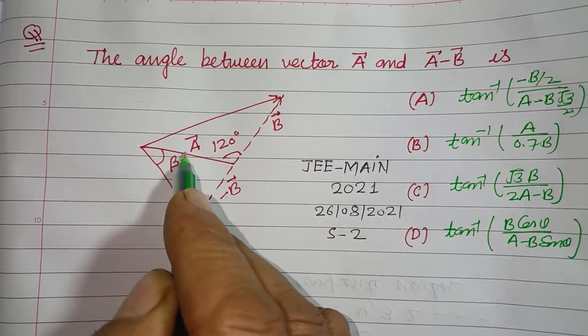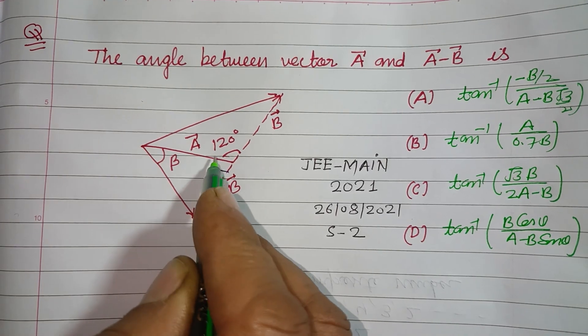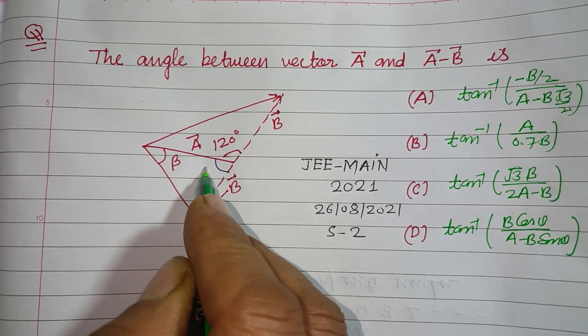So angle between A and B is 120 degrees, then angle between A minus B is 180 minus 120, this is 60 degrees.